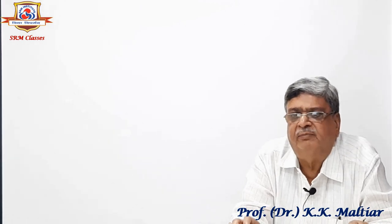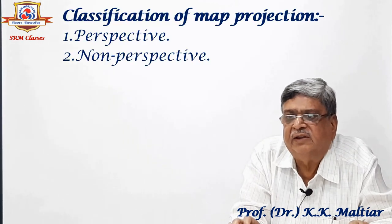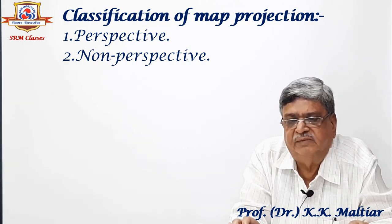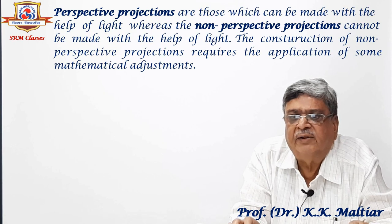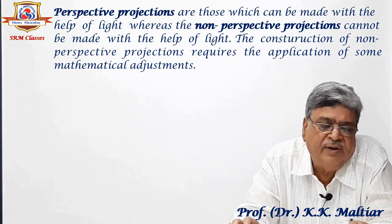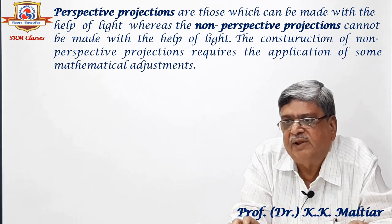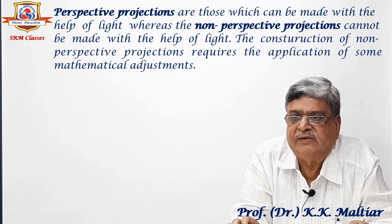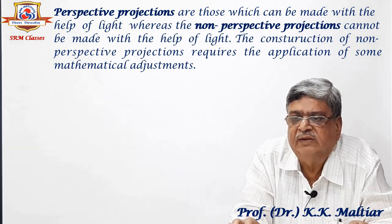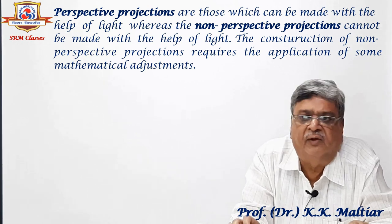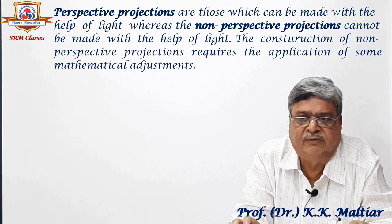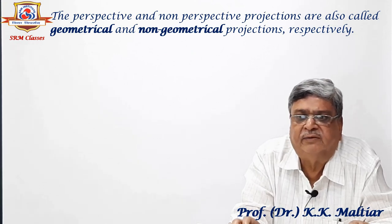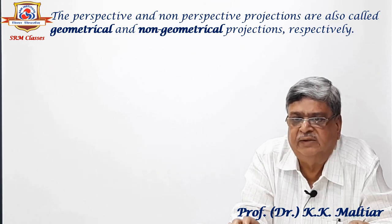Now I come to the classification of map projections. Projections have been classified under two broad heads: perspective and non-perspective. Perspective projections are those which can be made with the help of light, whereas the non-perspective projections cannot be made with the help of light. The construction of non-perspective projections requires the application of some mathematical adjustments. The perspective and non-perspective projections are also called geometrical and non-geometrical projections respectively.